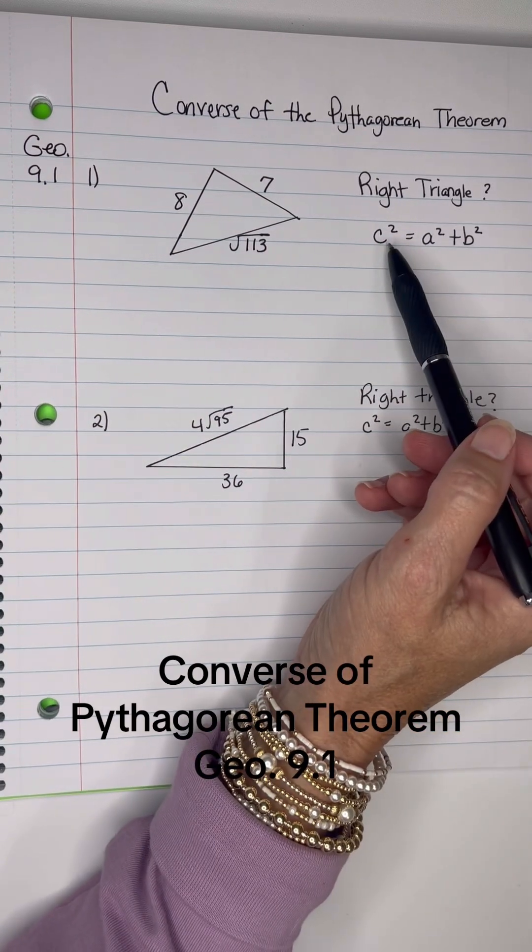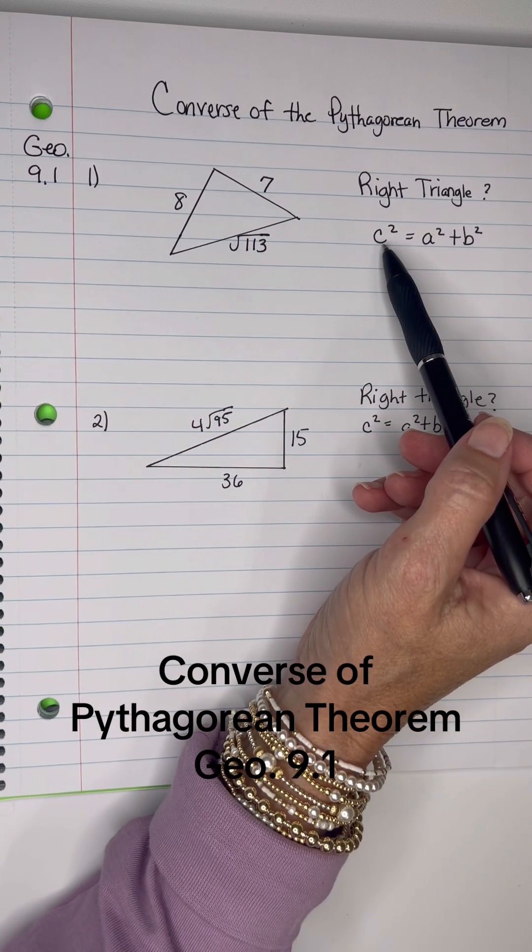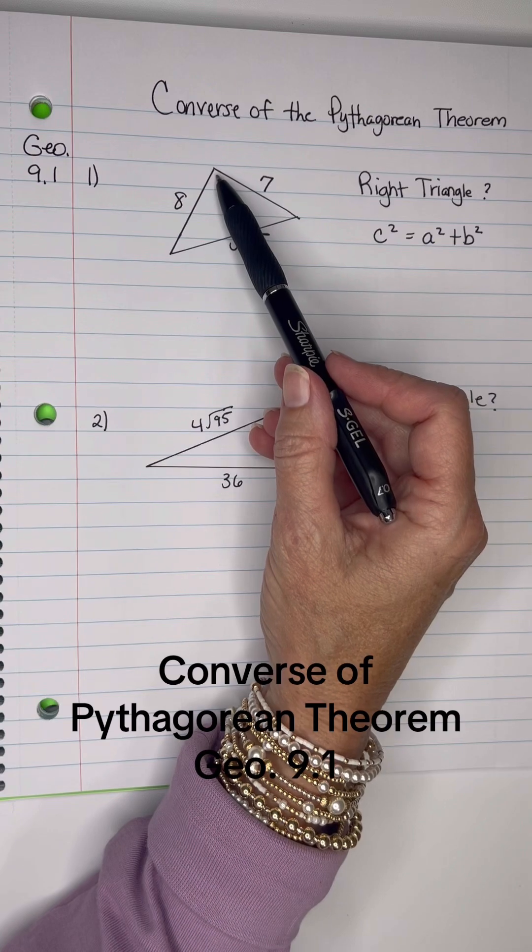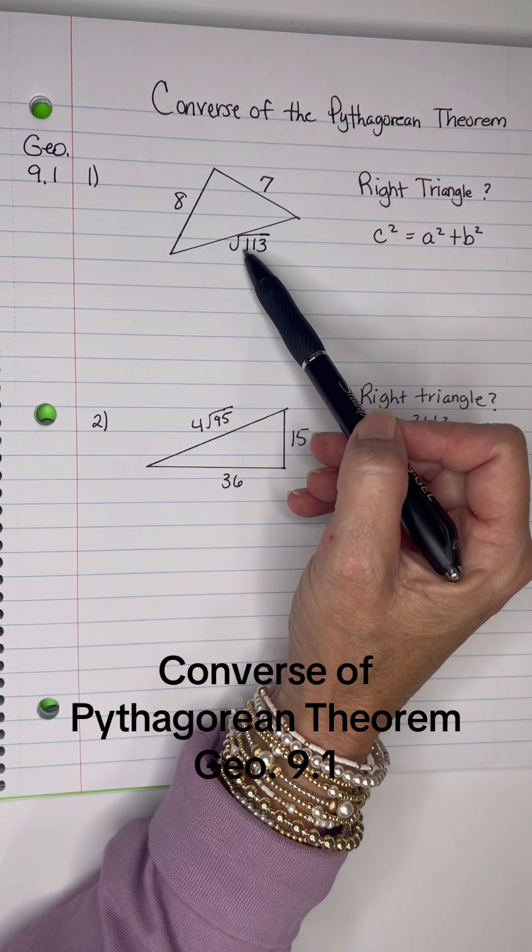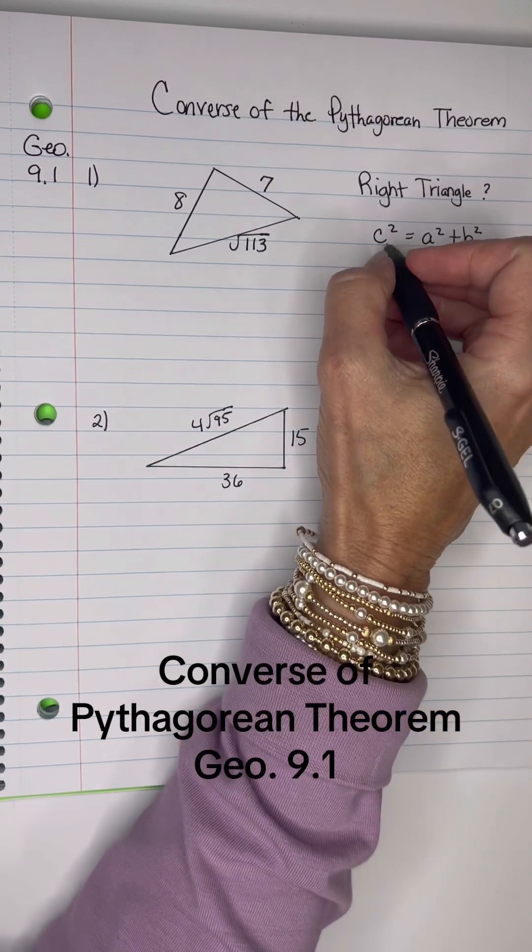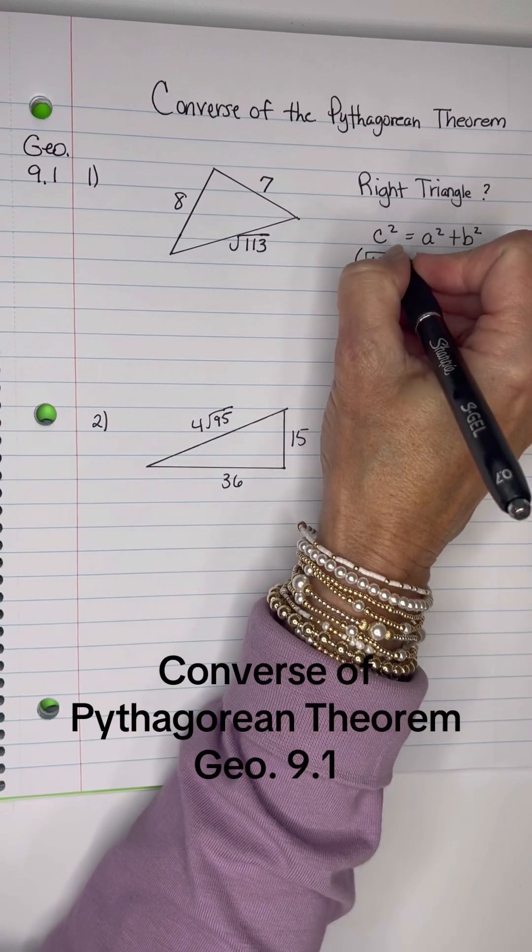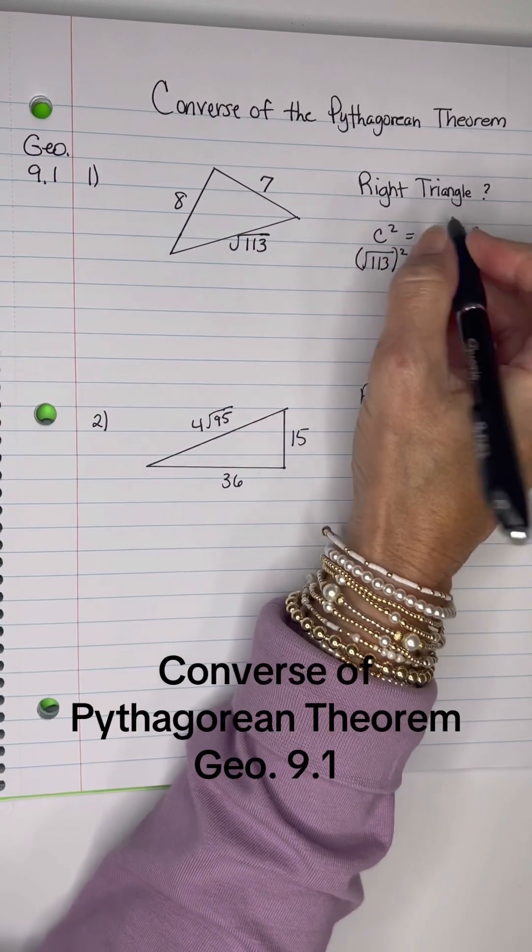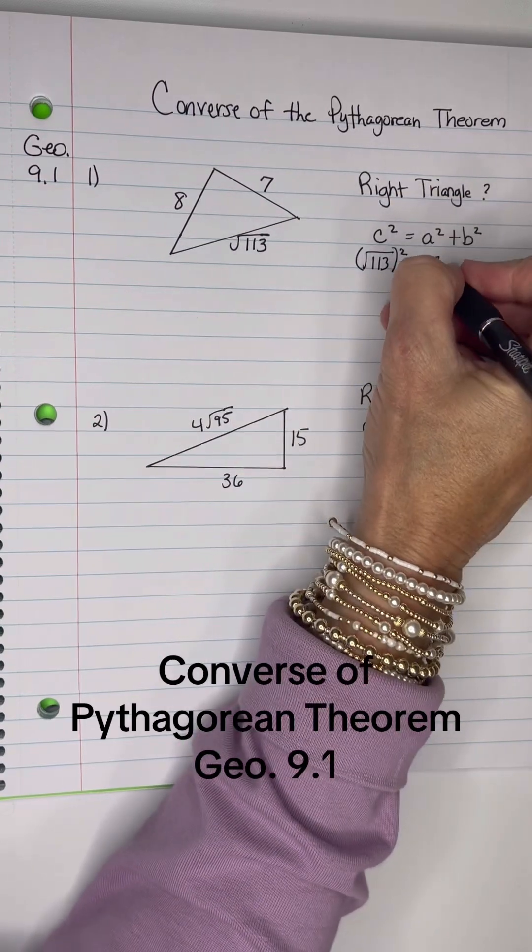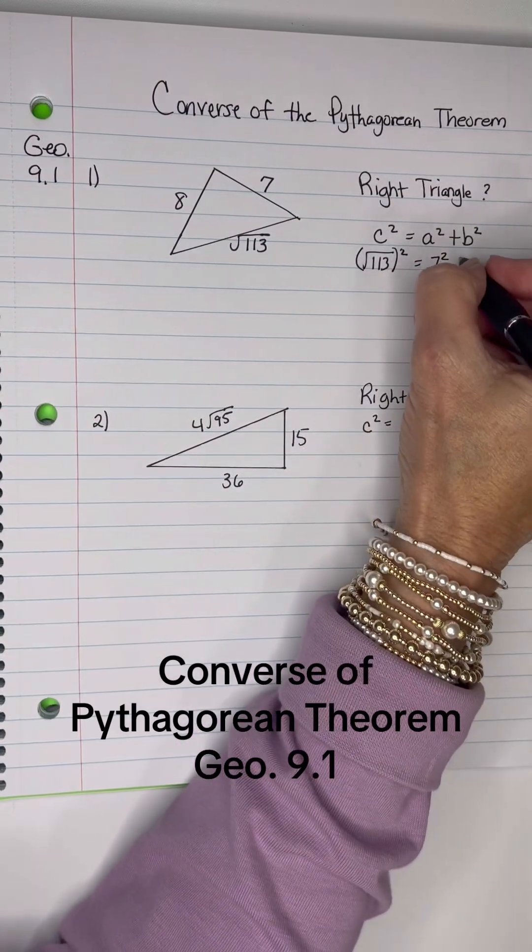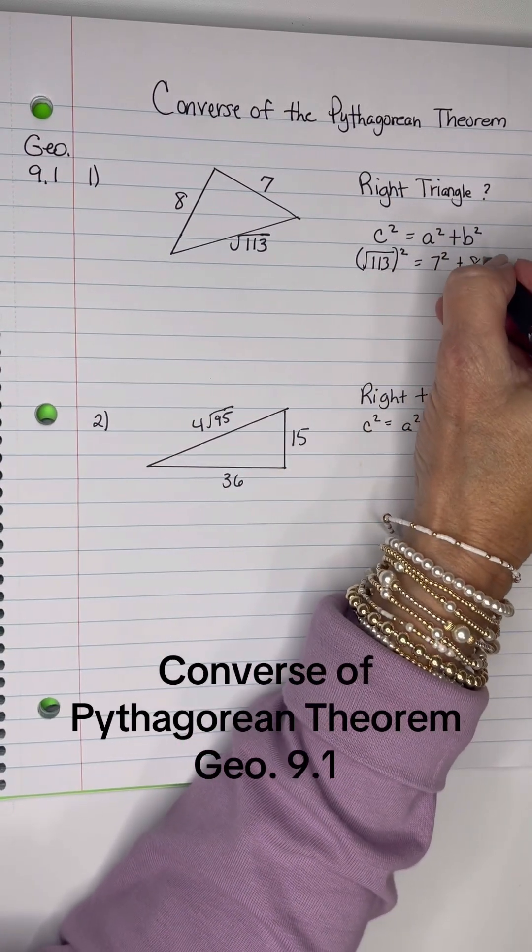Use the Pythagorean Theorem and plug in the numbers that you would know. This looks like it would be the right triangle, and it's opposite the square root of 113, so I'm going to replace the C with the square root of 113, and then put the square down. The A, I'm going to use the smallest number here, which is 7 squared plus 8 squared.